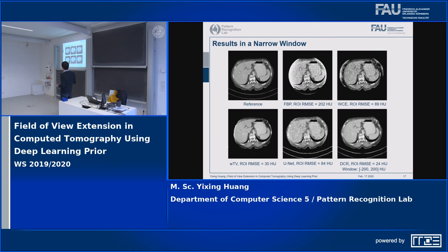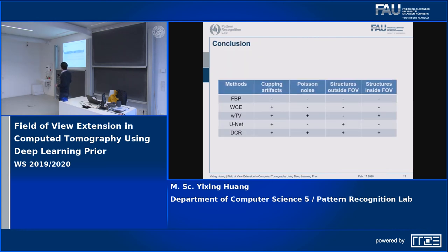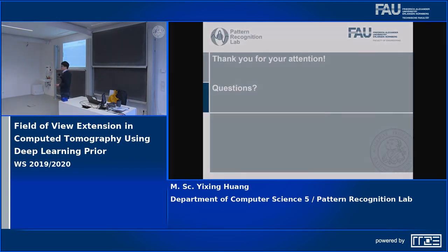In conclusion, for cupping artifacts, noise, structures outside the FOV, and structures inside the FOV, different methods have different disadvantages. Our proposed method combines the advantages of WTV and the U-Net, and we can see it performs well for all these aspects. Thank you.